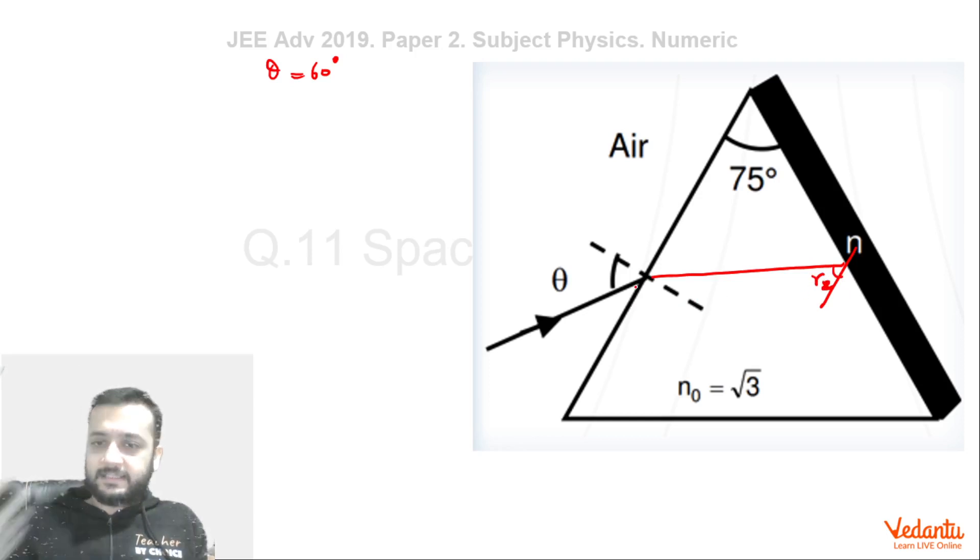In the question it is given that if theta is less than 60 then TIR will begin. That means we can say that at theta equals to 60 this angle would have become critical angle. Why? Because if you decrease theta less than 60 then this angle will also decrease because both of them are connected by Snell's law.